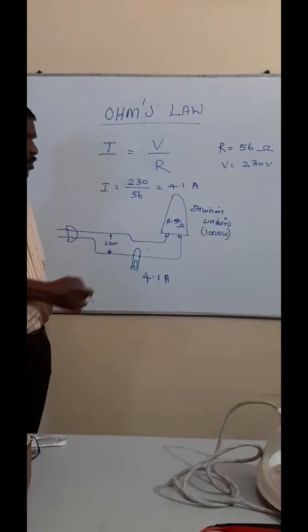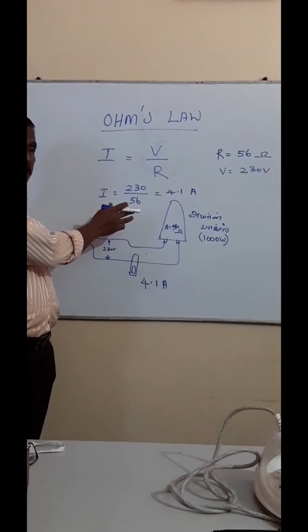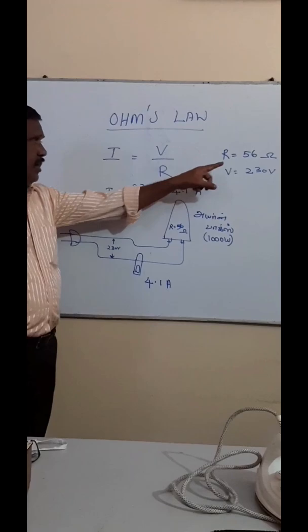For Ohm's Law, we will check the proof. We will get an iron box. The iron box's resistance value is 90 ohms. The iron box's voltage is 230 volts.